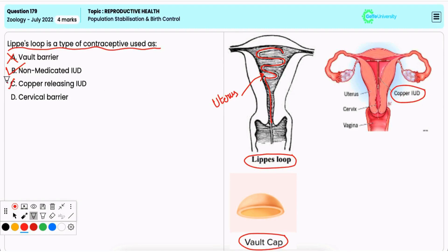Option C: copper releasing IUD. It is incorrect. Copper releasing IUDs release copper ions that reduce sperm mobility and viability. Lippes loop does not release any copper.